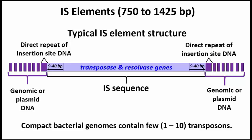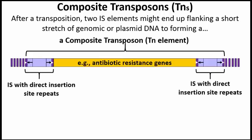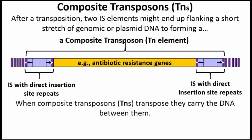Because of their compact genomes, bacteria can only tolerate low copy numbers of IS elements or other transposons in their genome. If a pair of IS elements should come to lie close to one another, they could be separated by a relatively short stretch of genomic or plasmid DNA. The IS elements and the DNA between them could then become a composite transposon, or a TN element, that can transpose as a unit. As you see here, TN elements on plasmids typically contain antibiotic resistance genes, which will travel along with the IS elements when the TN transposes.